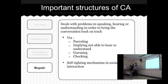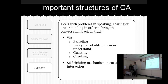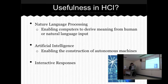The last structure is repair. This deals with problems with understanding, speaking, and hearing. Some methods that people use to resolve this include paraphrasing or guessing, as a way to restore intersubjective understanding. On the speaker's side, one could use examples, metaphors, and similes in order for the listener to gain a better understanding. In the end, repair acts as a self-righting mechanism in social interaction so that you would not be lost during a conversation.